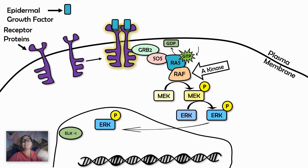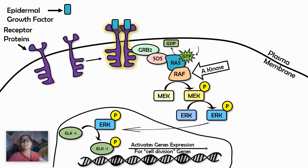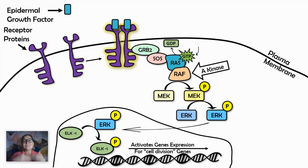Active RAS is important because it's going to activate RAF, which is a kinase. Kinases activate proteins by phosphorylating them. The MEK protein will be phosphorylated, starting the phosphorylation cascade that ultimately ends within the nucleus. The active ERK protein will then phosphorylate the transcription factor needed to turn on specific genes required for cell division and cell growth — helping to control the cell cycle and move the cell through G1, S, G2, and M phase.